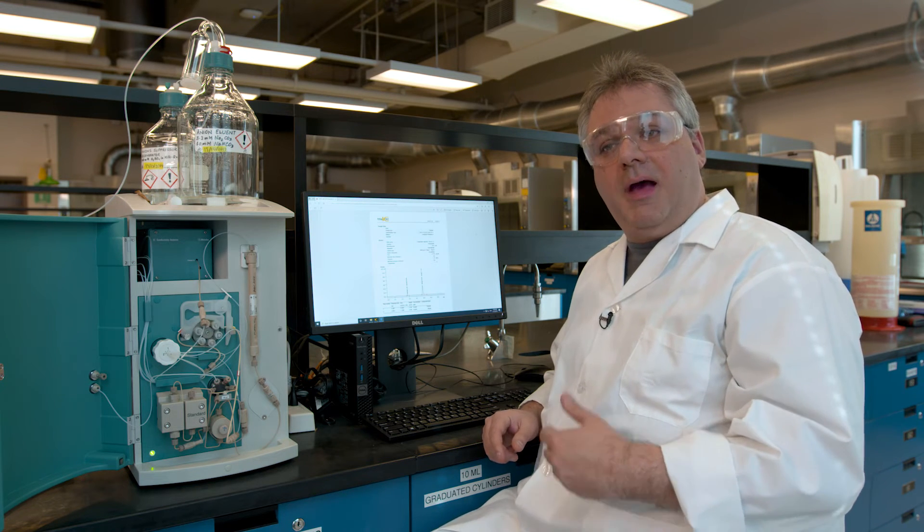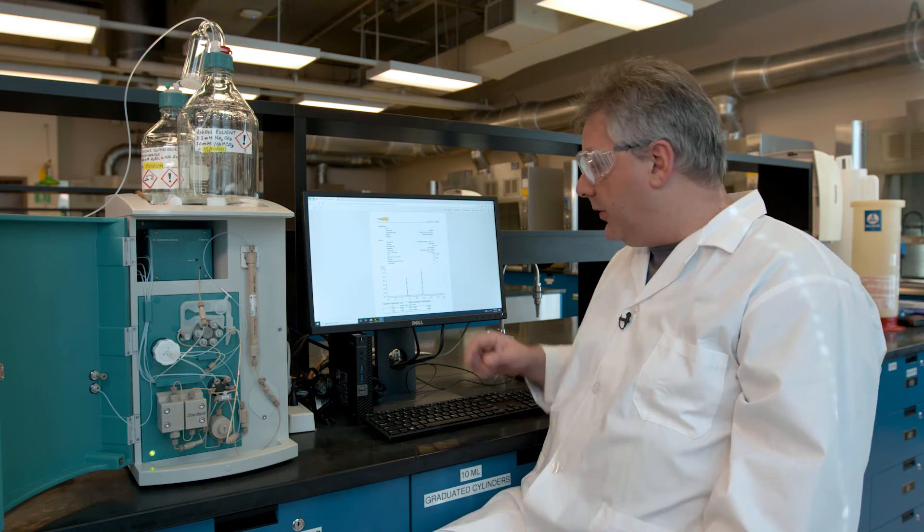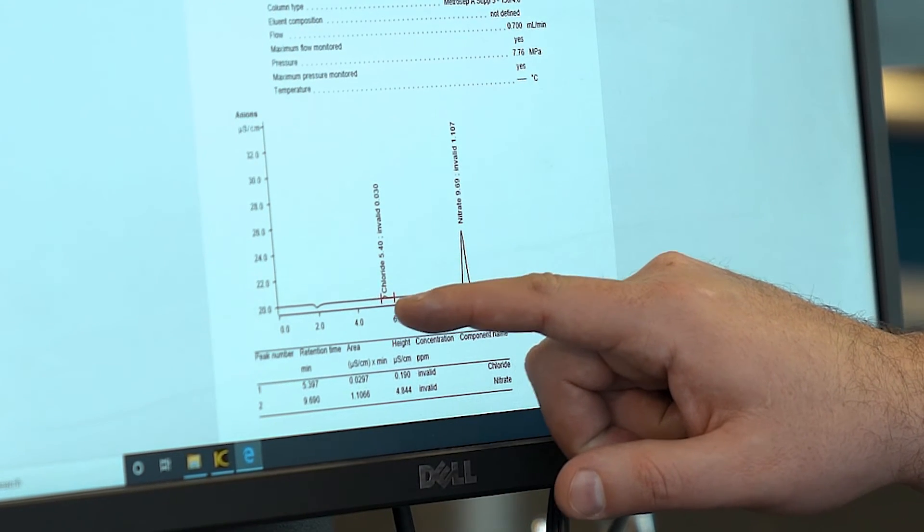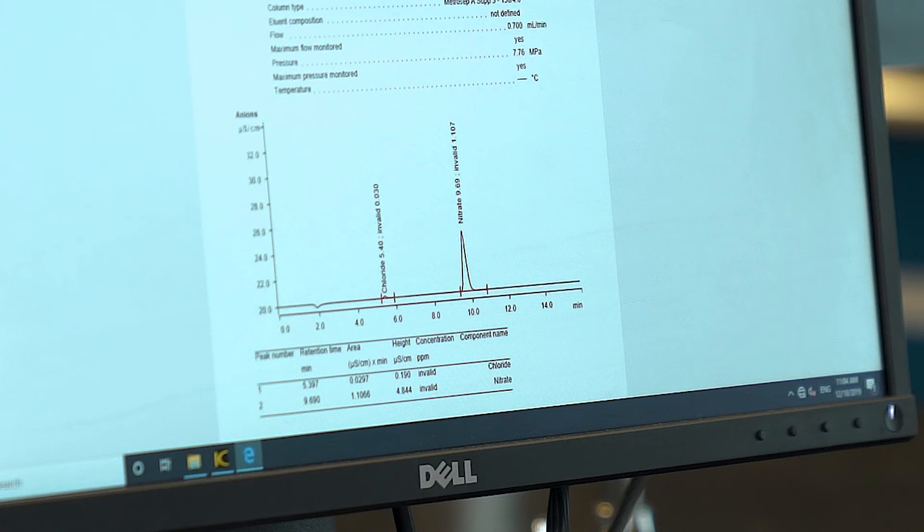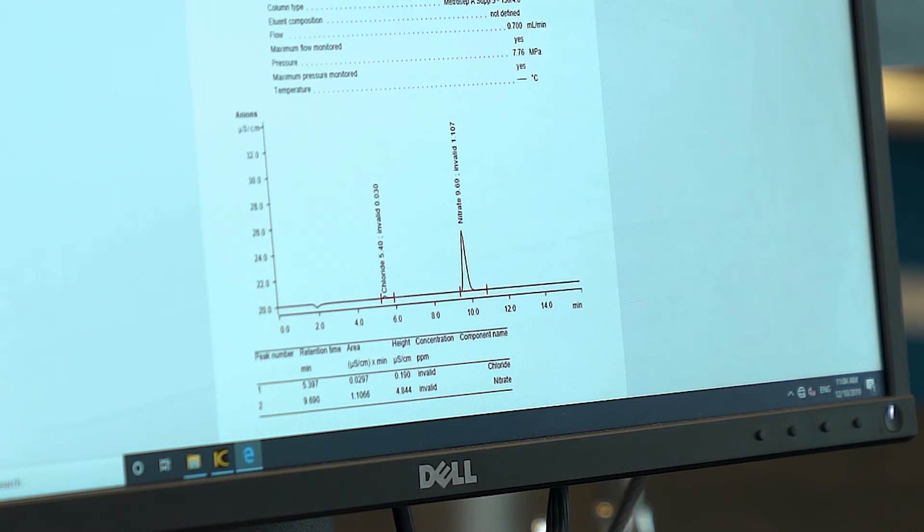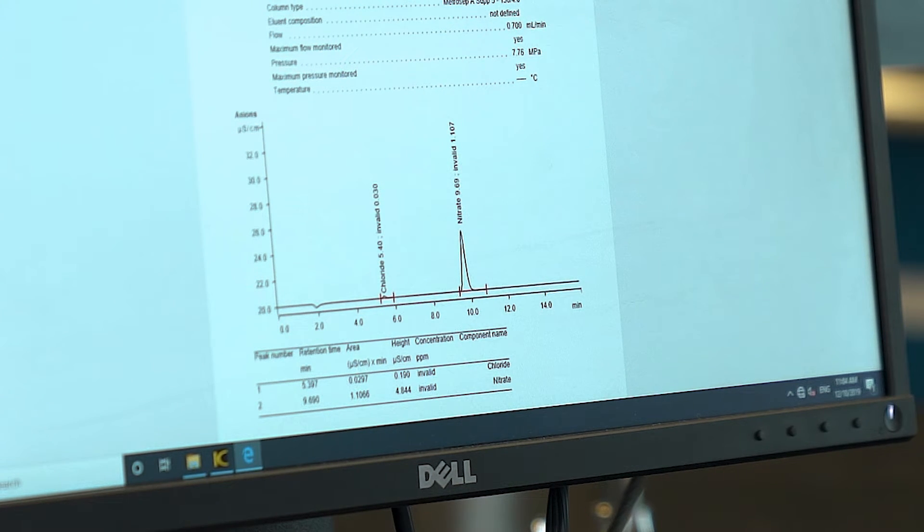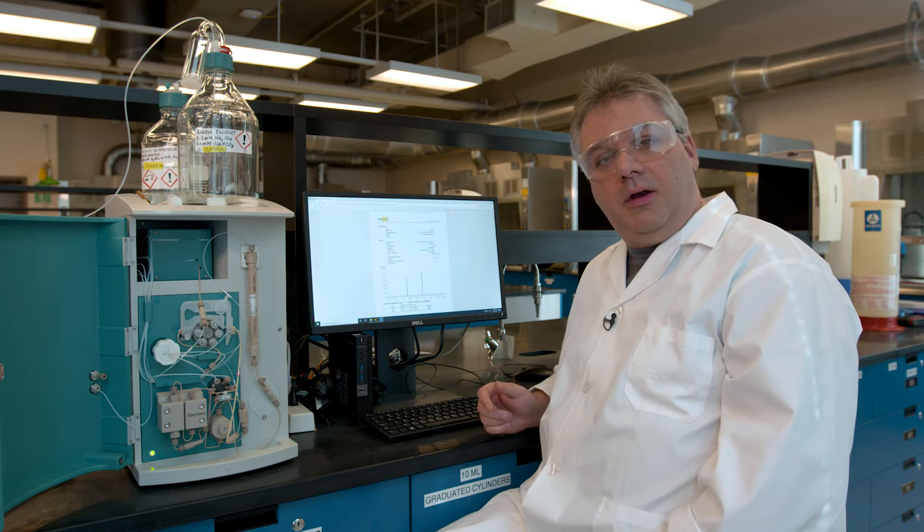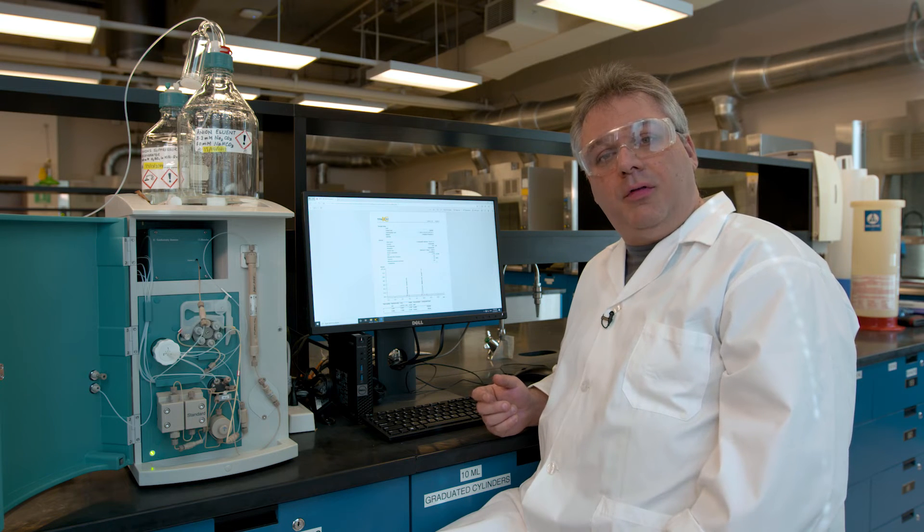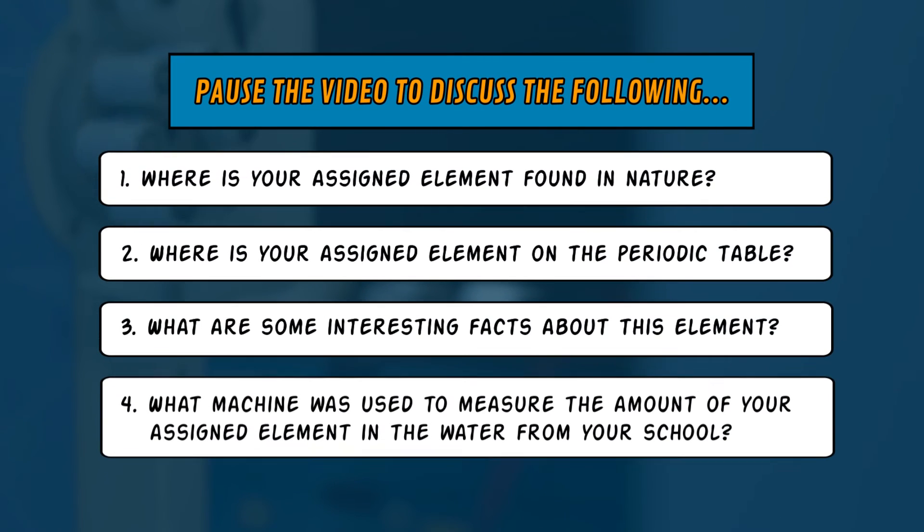So along here we have a chloride peak and a nitrate peak. You can see that the nitrate peak is much larger. That indicates that there's more nitrate in the sample than there is chloride. In the next segment, we'll look at what this means for the results we got for your school. Pause the video to discuss the following.